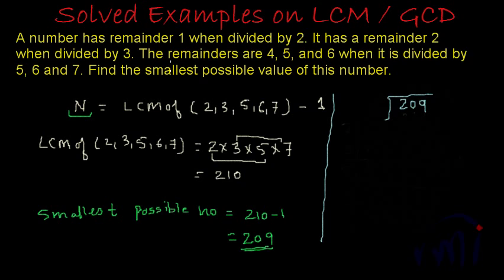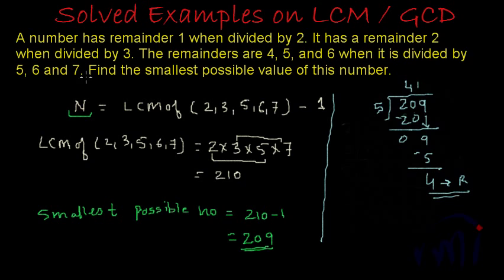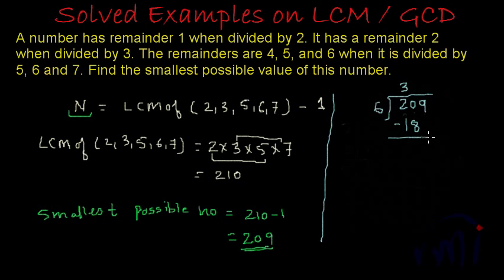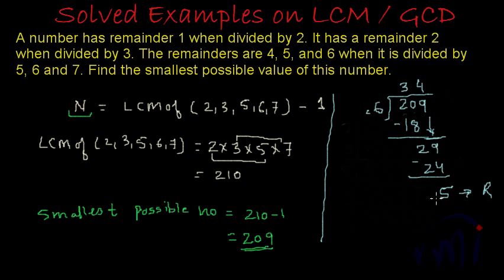Now if I divide by 5 — 5 fours are 20, bring down 9, 5 ones are 5 — and subtracting, I get 4 as remainder. So when we divide by 5 we get remainder 4. And if I divide by 6 — 6 threes are 18, 20 minus 18 is 2, bring down 9 to get 29, 6 fours are 24 — the remainder is 5. So when we divide by 6 we get remainder 5.